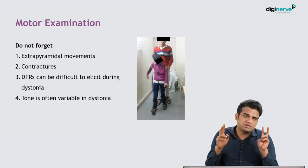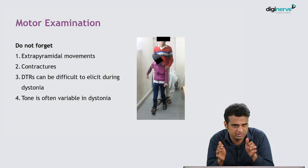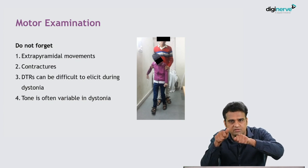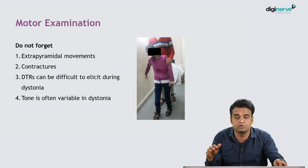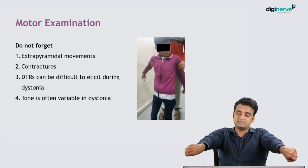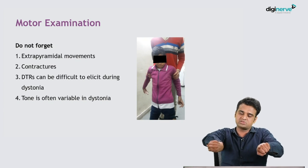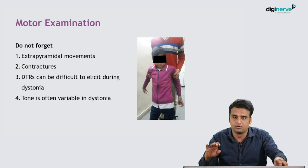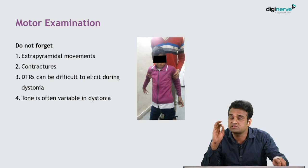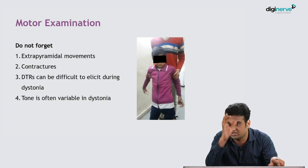Tone is often variable in dystonia — when the child is tight it may look high, but when sleeping it may look totally loose. As seen in this video, the child is ambulatory but shows abnormal twisting movements in both the upper and lower limbs while trying to walk. Do not miss these extrapyramidal movement disorders, because if you do, your entire case assessment and many of your findings may go wrong.